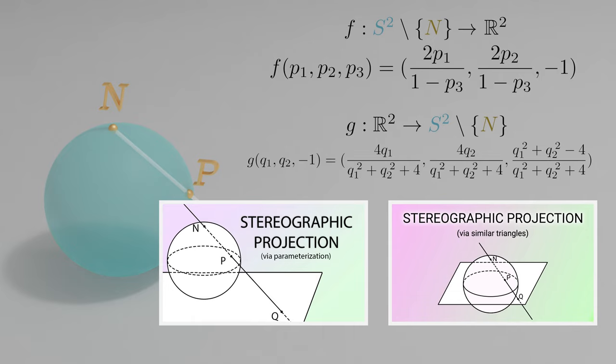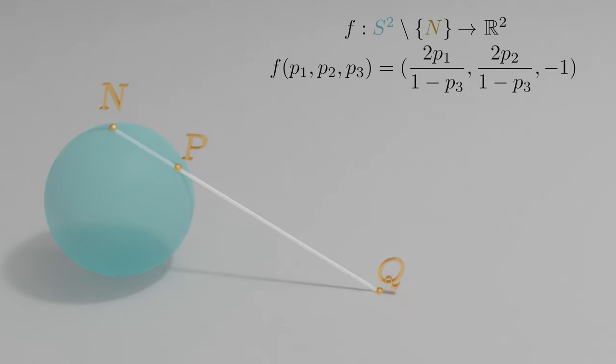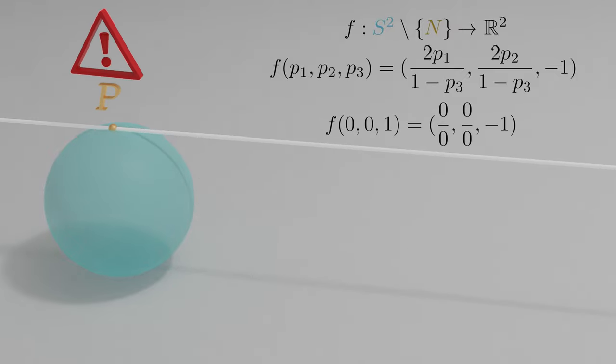Links will be provided in the description. You may have noticed that for this function f, the closer p is to the north pole of the sphere, the further out in the plane q gets sent. The reason why these functions naturally define a map between the punctured sphere and R2 is because when we plug the north pole itself into the function f, we end up with division by zero errors.